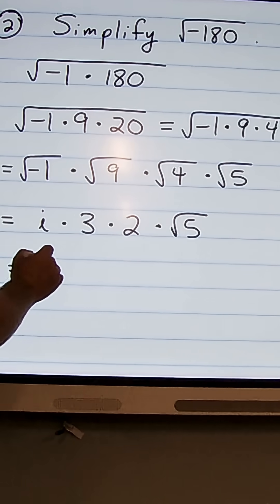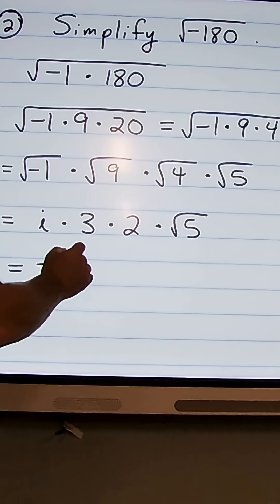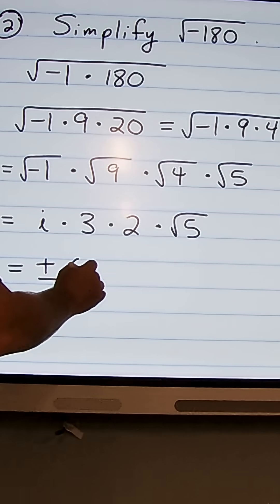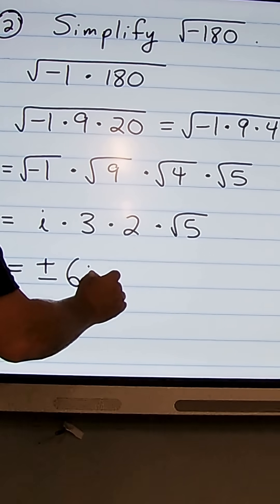So we're going to write our solution as plus or minus. Let's do 3 times 2. That gives me 6 times i. So 6i times the square root of 5.